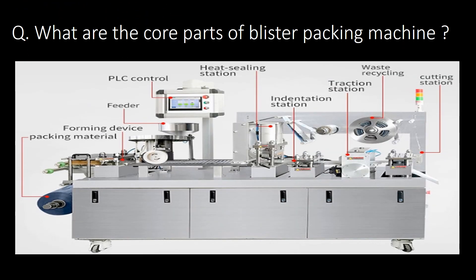What are the core parts of a blister packing machine? Packing material, forming device, feeder, PLC control, heat sealing station, indentation station, traction station, and waste recycling and cutting station are the core parts of a blister packing machine.